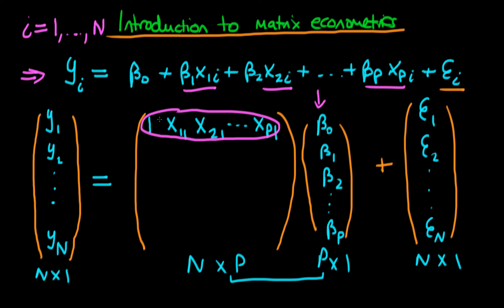If we do that, we get 1 times β0, plus x11 times β1, then x21 times β2, all the way through to xp1 times βp. So writing out this first row explicitly, we have β0 + β1x11 + β2x21